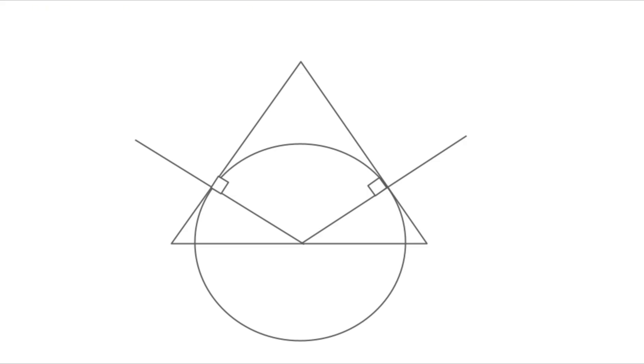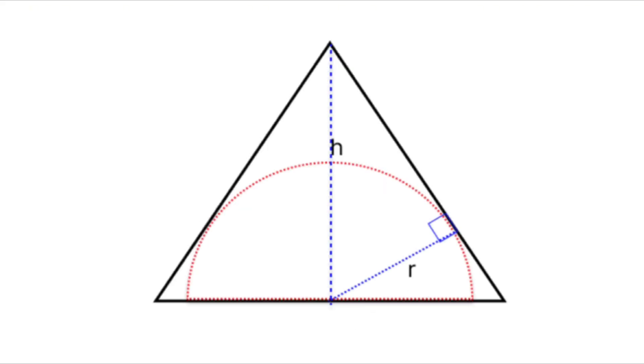Here's the clever insight that unlocks everything. The sides of the triangle are tangent to the semicircle. That means they touch the semicircle at exactly one point. No more, no less. And here's a powerful geometry fact. A radius drawn to a point of tangency is always perpendicular to the side it touches. So what does that give us? It creates a right angle. And with that, we now have a new right triangle.